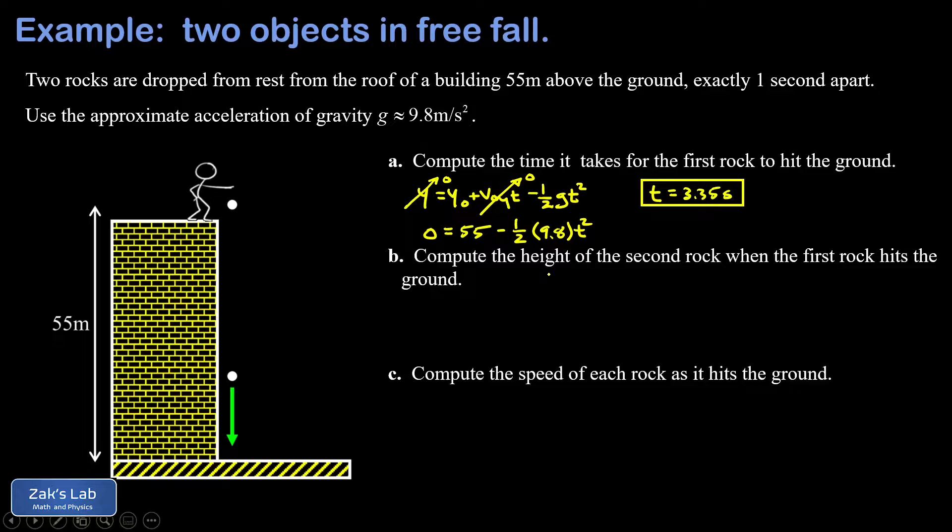In part b, we're asked to compute the height of the second rock when the first rock hits the ground. The second rock was released one second later, so it's been falling for one second less than 3.35 seconds. That means the fall time so far for this rock is 2.35 seconds.